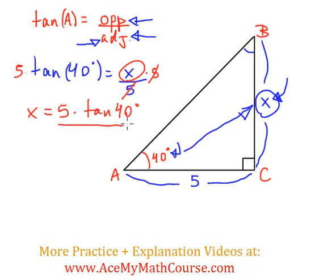And now I can plug that into the calculator, I will do so in just one step. So 5 tangent of 40 degrees will be equal to 4.195 and that's it.